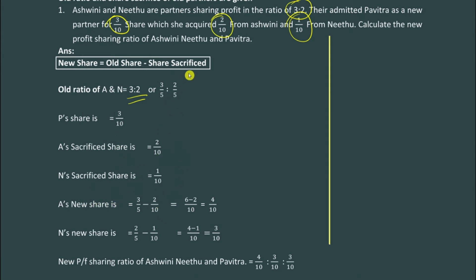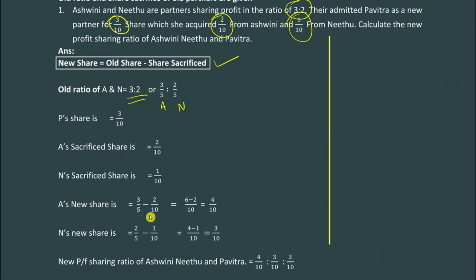Now we find the new share using the formula: new share = old share minus share sacrificed. We already have the old share and the share sacrificed. So Ashwini's new share = old share 3/5 minus sacrificed share 2/10.